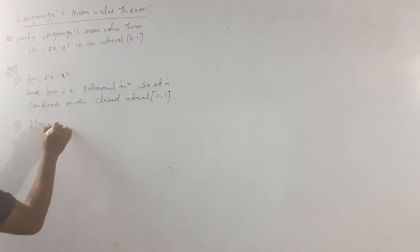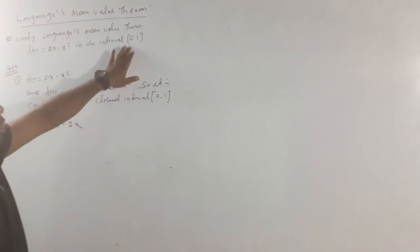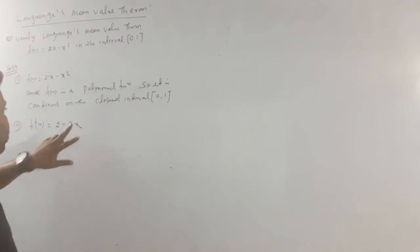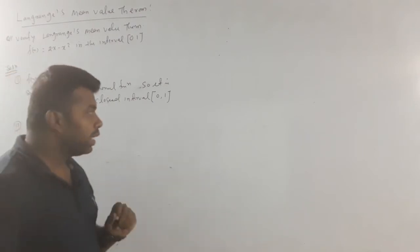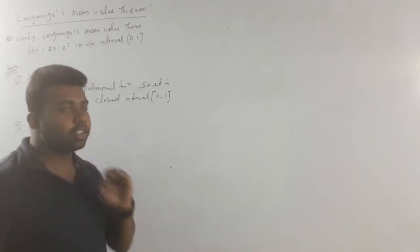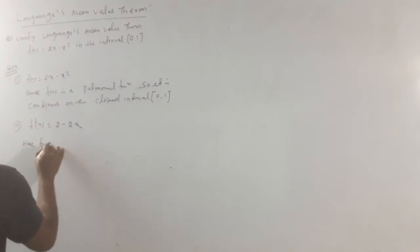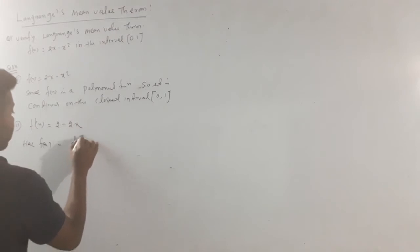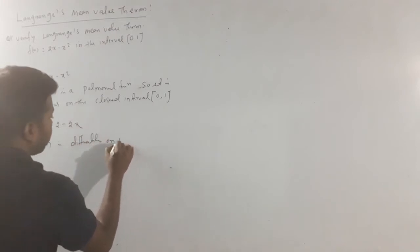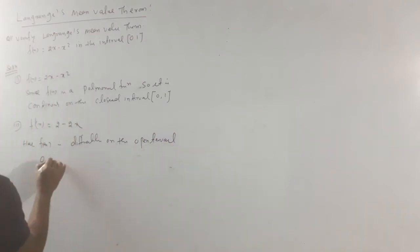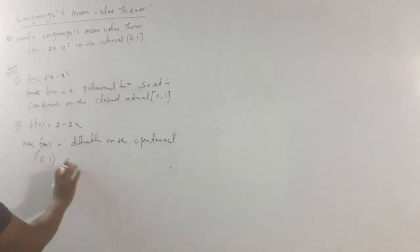Now the differentiability check. The derivative: f prime of x is 2 minus 2x. Since f prime of x exists for all values in the open interval, f of x is differentiable on the open interval 0, 1. So both the first condition and second condition are satisfied.